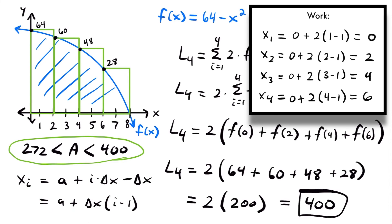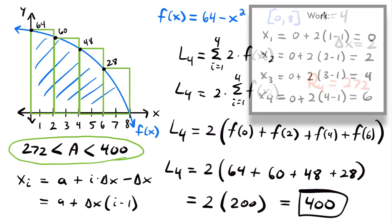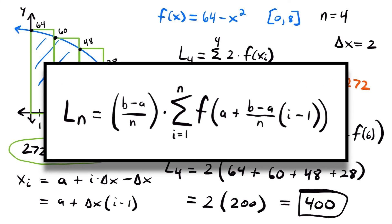For left endpoints, x sub i equals a plus delta x times i minus 1, which is the same as a plus delta x times (i minus 1). This gives the same values of x — 0, 2, 4, and 6 — that we used in this calculation. This is the formula for a Riemann sum that uses left endpoints: delta x times the summation from 1 to n of f(x sub i), where we sum up those left endpoint heights.